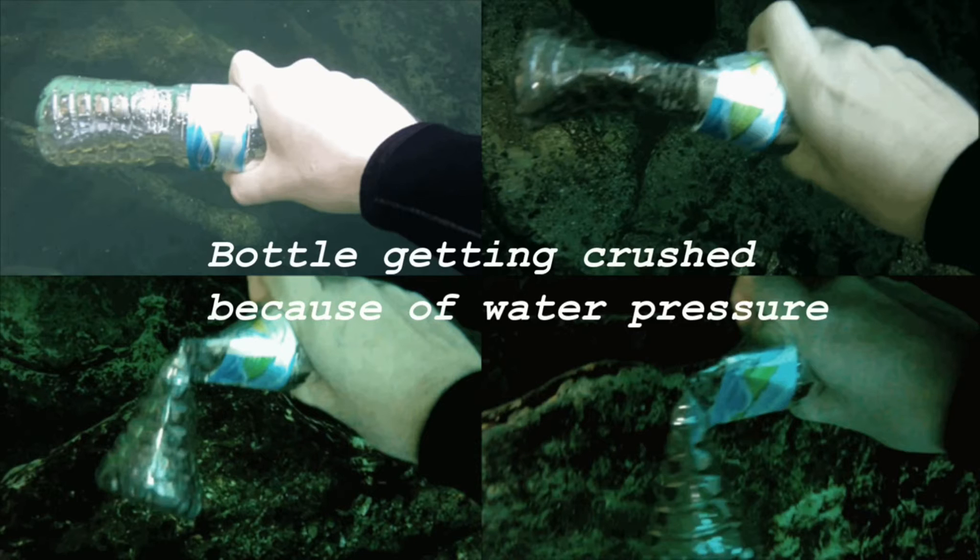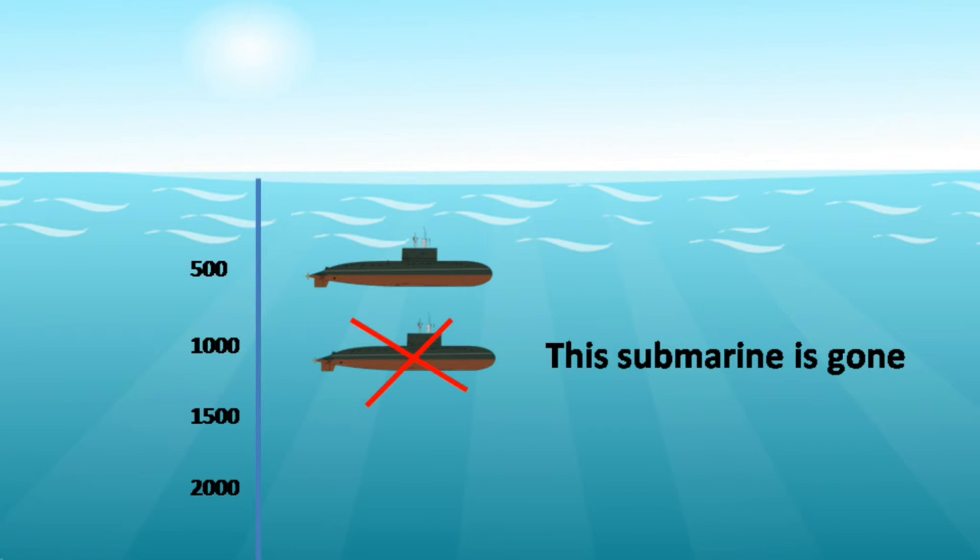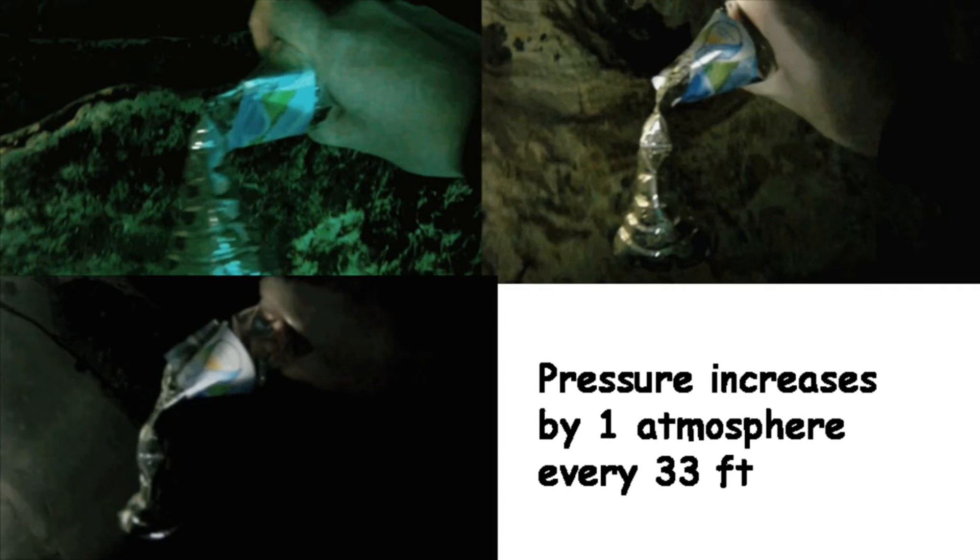Even submarine walls can collapse because of water pressure if it tries to cross 900 meters. Pressure increases by the equivalent of one atmosphere every 10 meters or 33 feet.